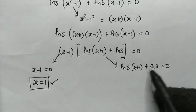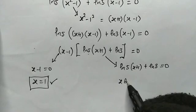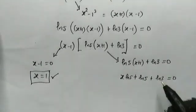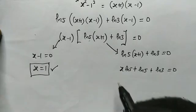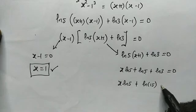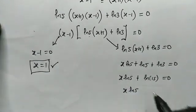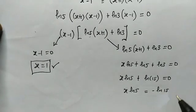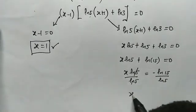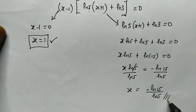From the bracket equal to zero, we expand: x times natural log of 5 plus natural log of 5 plus natural log of 3 equals 0. We can simplify natural log of 5 plus natural log of 3 to natural log of 15, since 5 times 3 is 15. Subtracting natural log of 15 from both sides gives x times natural log of 5 equals negative natural log of 15. Dividing both sides by natural log of 5, we arrive at the second solution: x equals negative natural log of 15 divided by natural log of 5.